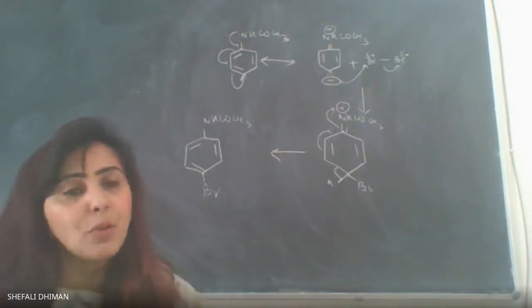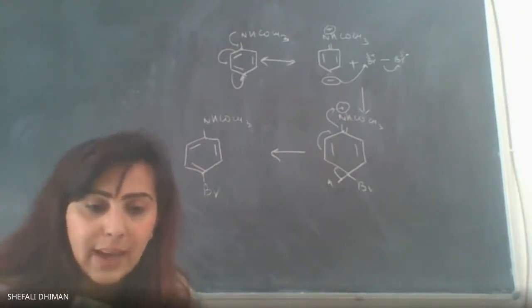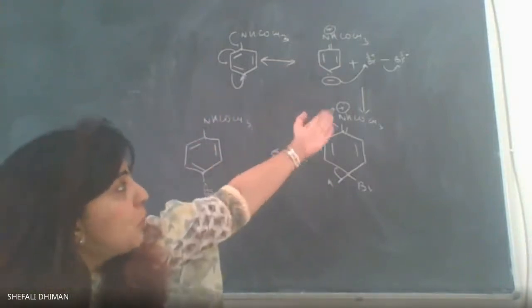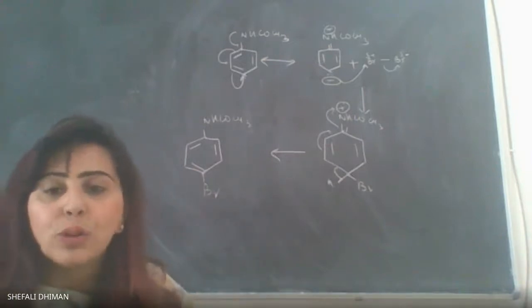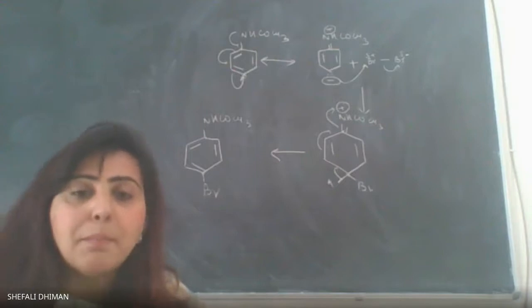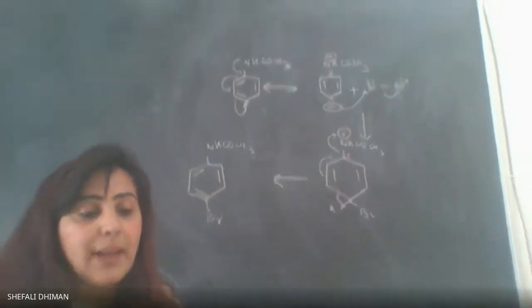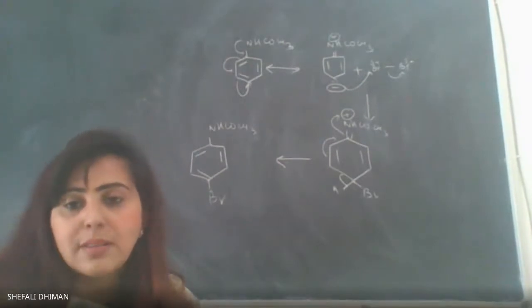The aim of the experiment is to prepare para-bromoacetanilide from acetanilide. We have acetanilide and we react it with bromine. The end product is para-bromoacetanilide. It forms both ortho and para, but the major product is para and the minor product is ortho.